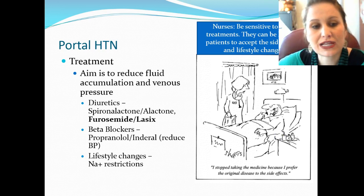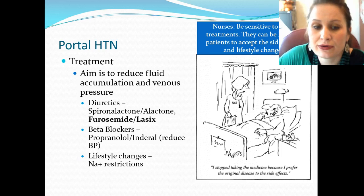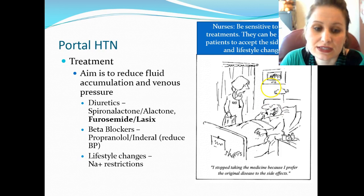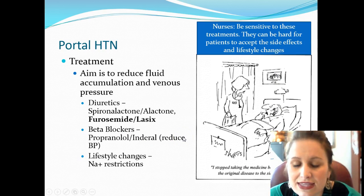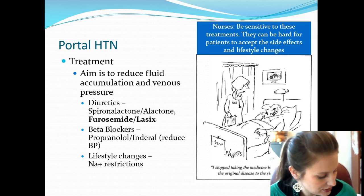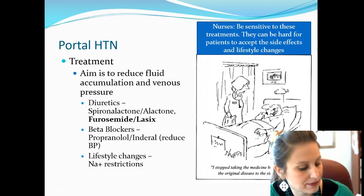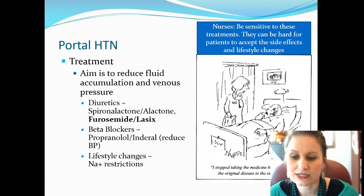Treatment for portal hypertension aims to reduce fluid accumulation and venous pressure. We use diuretics — often spironolactone (Aldactone) and furosemide. To control hypertension we use beta blockers like propranolol (Inderal) to reduce blood pressure. Lifestyle changes include restricting sodium, since water follows sodium and sodium retention worsens ascites.